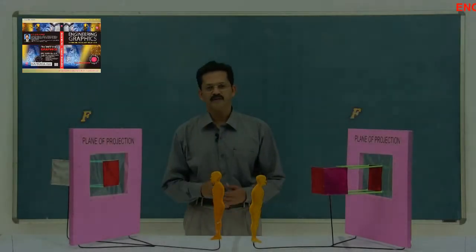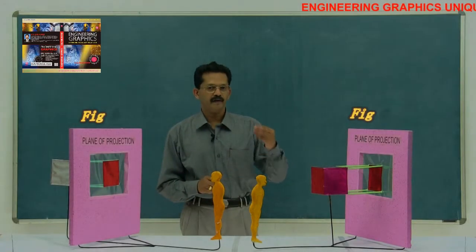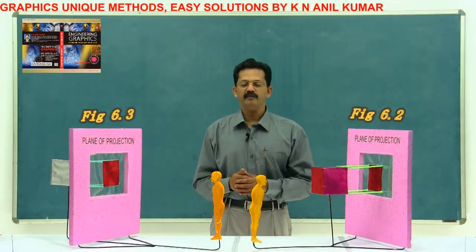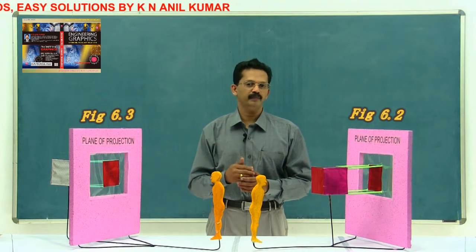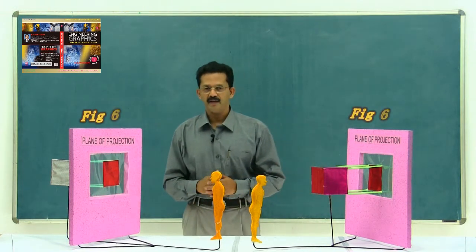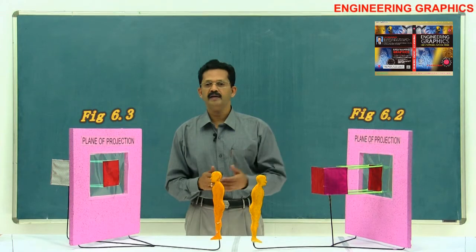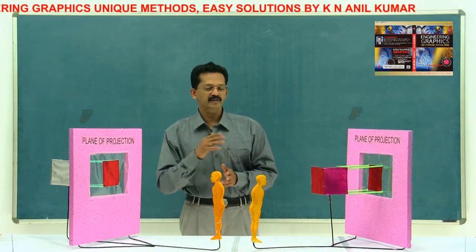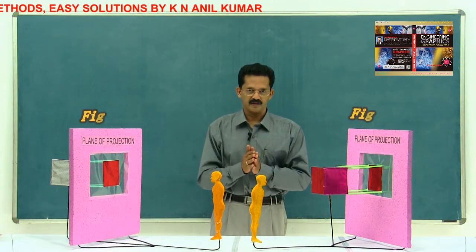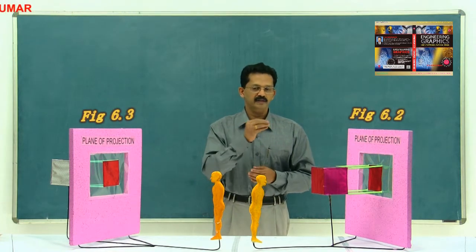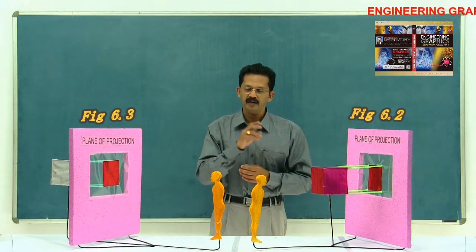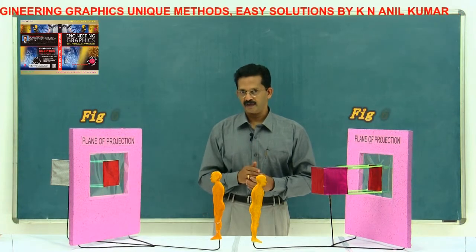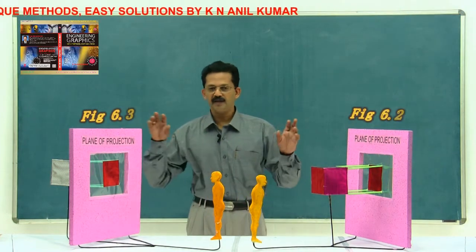We have studied the projections of two objects in space — one in front of the imaginary plane and the other behind the imaginary plane. In that example, we considered a ship as an object in front of the imaginary plane and the moon as an object behind the imaginary plane, with the sky as the imaginary plane. We have seen that irrespective of the position of the object, the projection will be obtained on the imaginary plane.